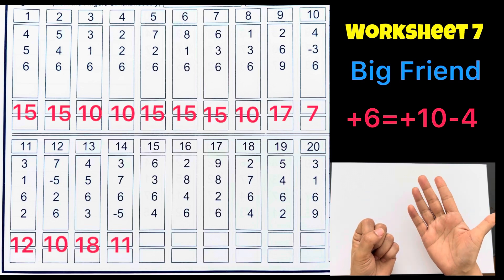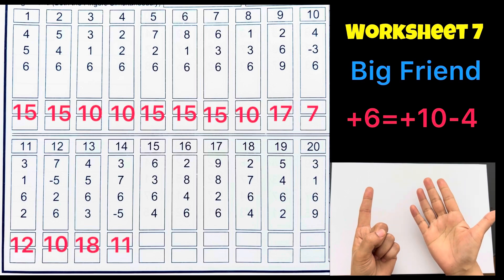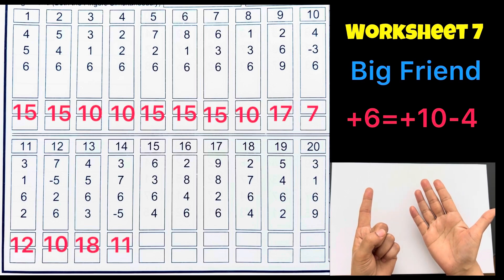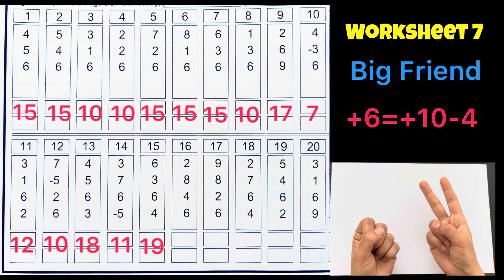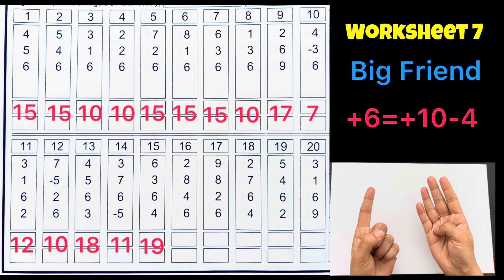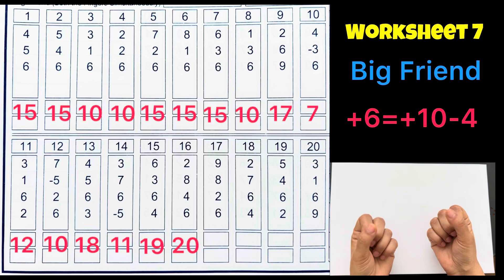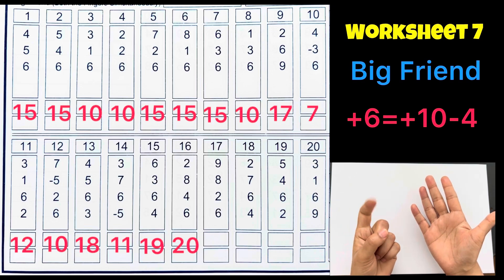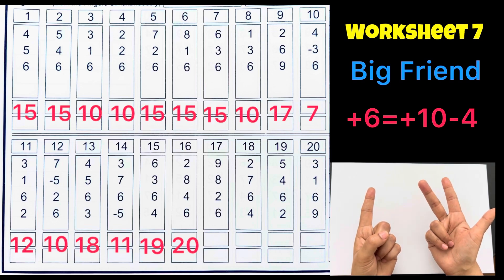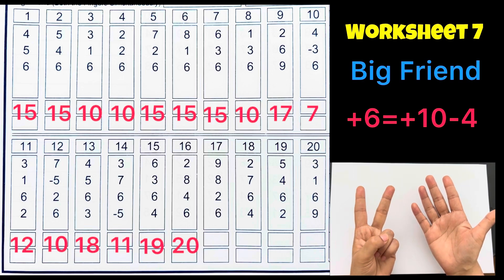6 plus 3 plus 6 plus 10 minus 4 plus 4, answer is 19. 2 plus 8 plus 10 minus 2 plus 4 plus 6 plus 10 minus 4, answer is 20. 9 plus 8 plus 10 minus 2 plus 2 plus 6 plus 10 minus 4, answer is 25.